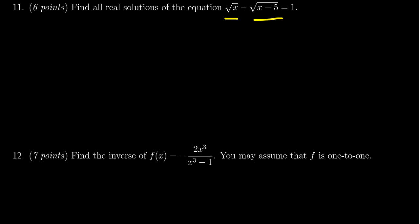Our strategy when dealing with these square root equations is we want to isolate one of the square roots, then square both sides, and then iterate this process until all the square roots are gone. Because there's a negative in front of the square root of x minus 5, I'm going to add the square root of x minus 5 to both sides, essentially moving it to the right-hand side of the equation. This gives us the square root of x is equal to 1 plus the square root of x minus 5.